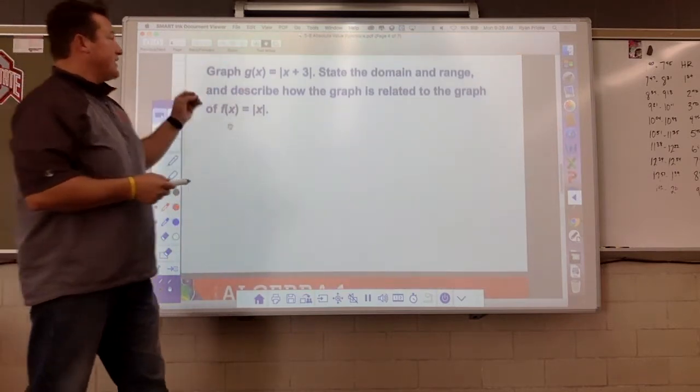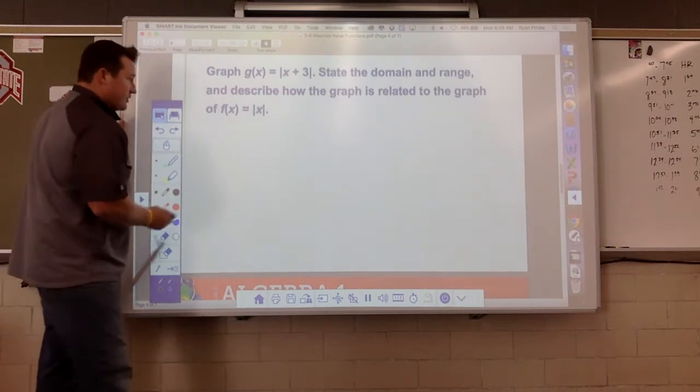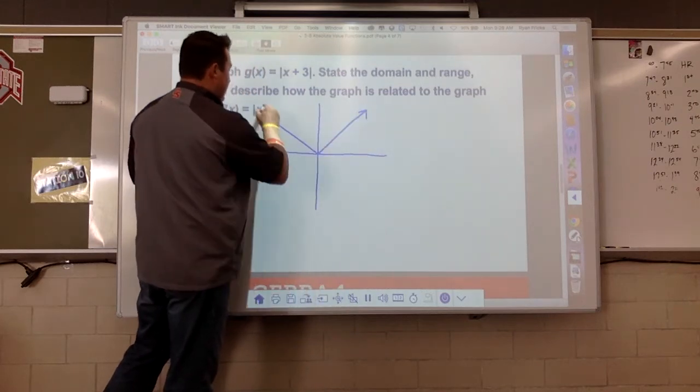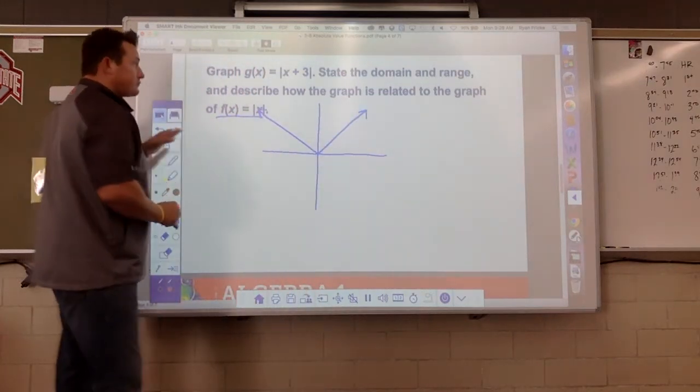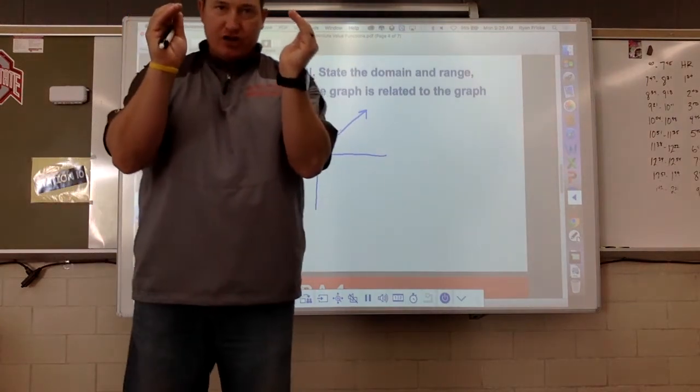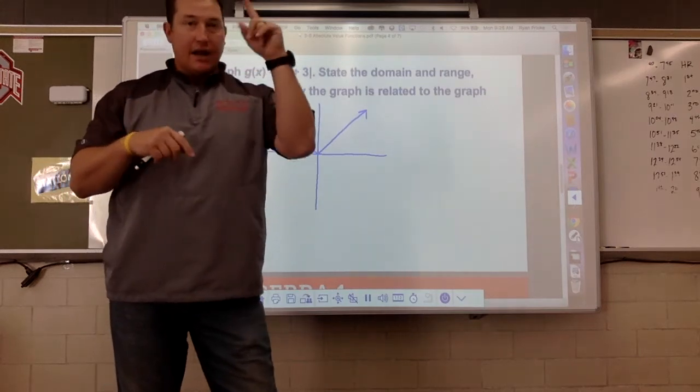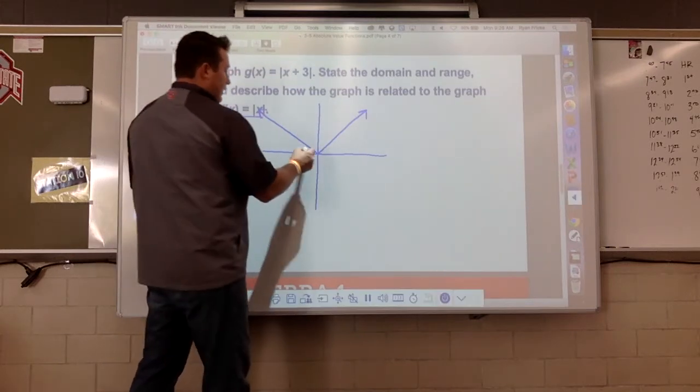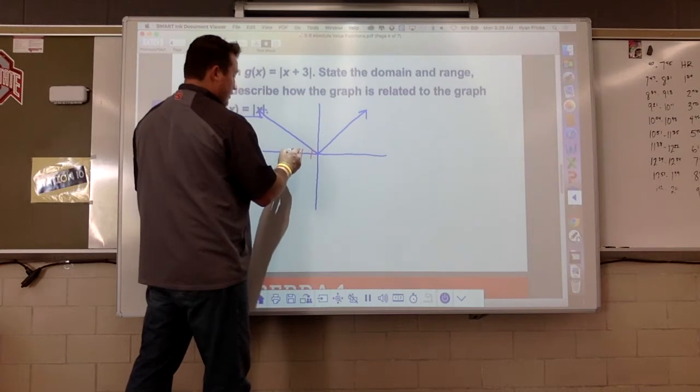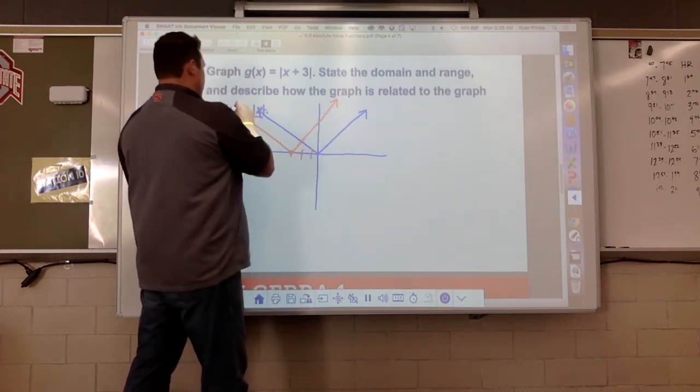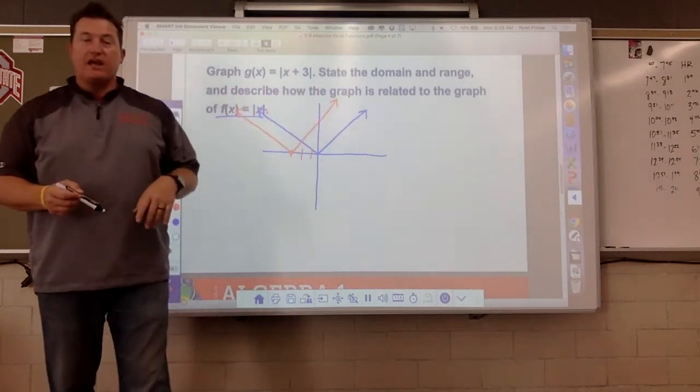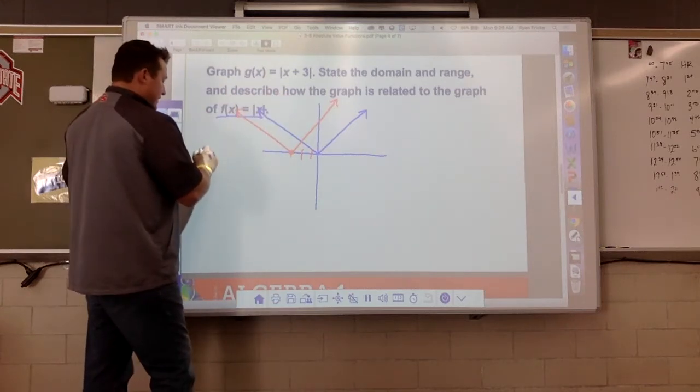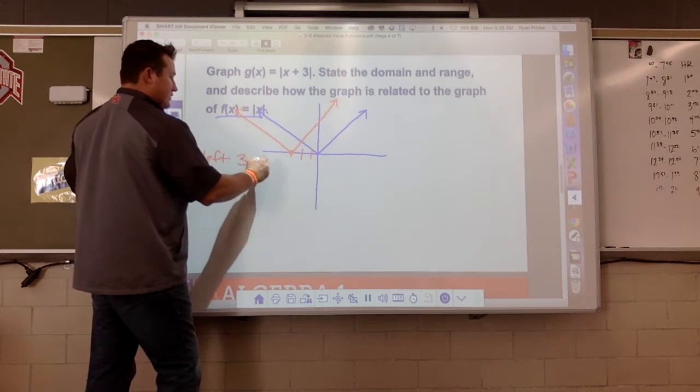All right, graph this one, state the domain and range, describe how it's related. I should not have erased my other function. Again, here is our parent function. If we're going to graph this one, again, it's inside that expression, that absolute value expression. This is not an up or down move now. This is going to be a left or right move. Lock in your guess, I'm going to graph it up here. So x plus three, this is really a goes left three units move.